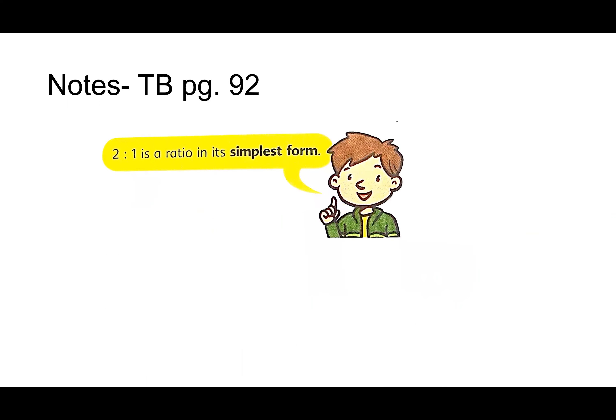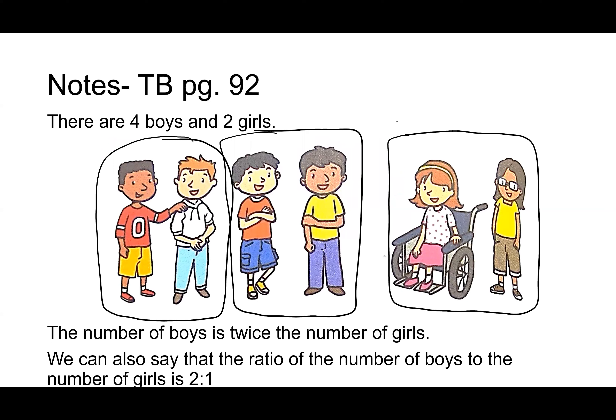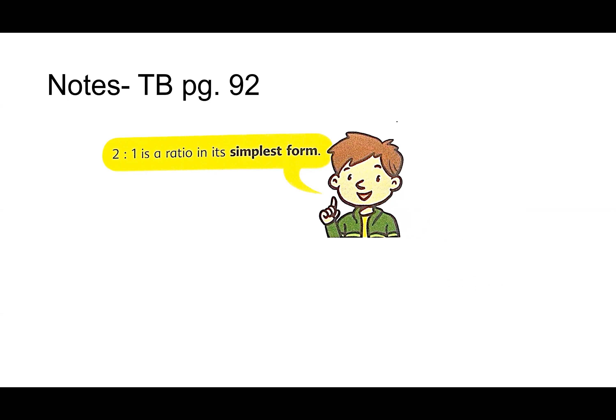Remember: ratios are comparisons, not numbers. A ratio might not give you the actual quantities — they give you units. So back with boys and girls, we had units of two kids, giving a ratio of two to one. Four to two equals two to one — we divided both terms in the ratio by two.